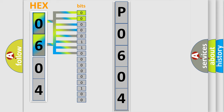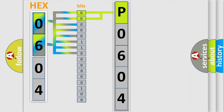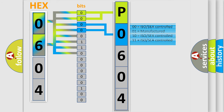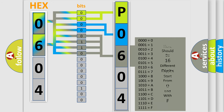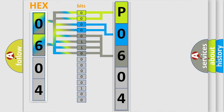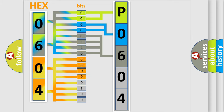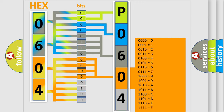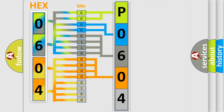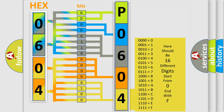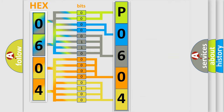By combining the first two bits, the basic character of the error code is expressed. The next two bits determine the second character. The last four bits of the first byte define the third character of the code. The second byte is composed of a combination of eight bits. The first four bits determine the fourth character, and the combination of the last four bits defines the fifth character. A single byte conceals 256 possible combinations.